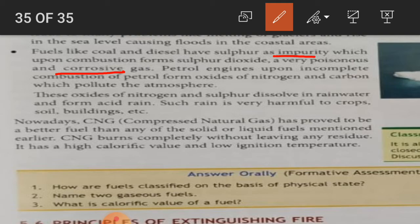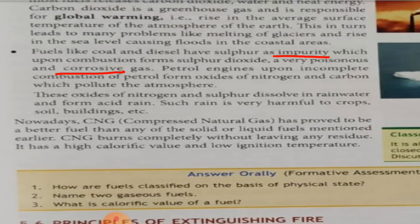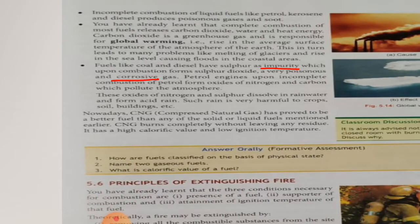Impurity means dust or unwanted substance. So in this point we have seen that some fuels such as coal, diesel, and petrol upon combustion form oxides of nitrogen and sulfur, which are very poisonous and very corrosive to our environment. These oxides combine with water vapor of the atmosphere and form acid rain. Acid rain is very harmful to crops, soil, and buildings.